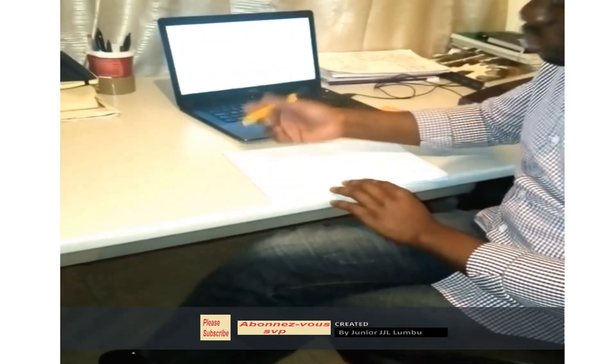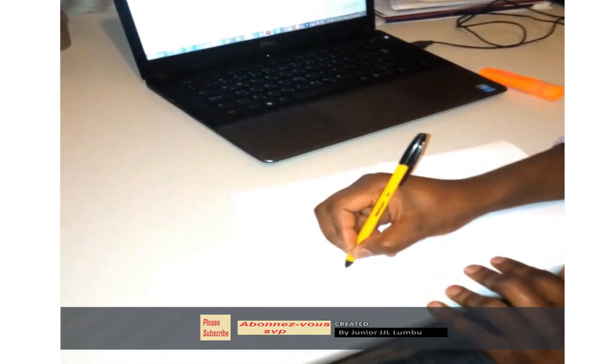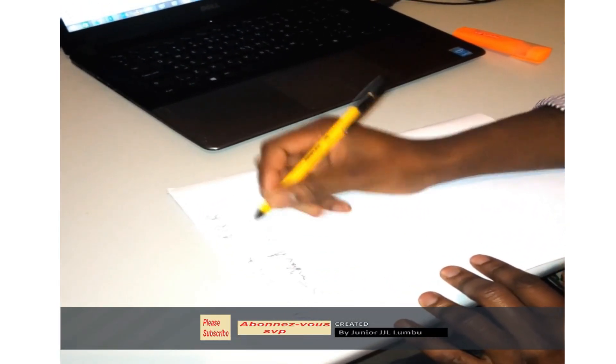So from there, the WPS can be used. We need to know that the WPS is a document that allows the repeatability of a specification - how they're going to apply the procedure. For a WPS to be accredited, it needs to be supported by PQR. We're talking about tests that are done according to specific standards - ASME (American Society of Mechanical Engineers), AWS (American Welding Society).